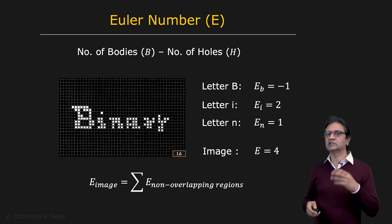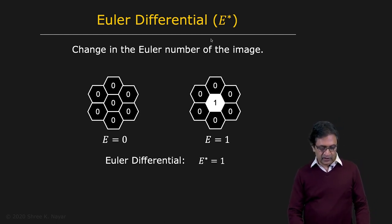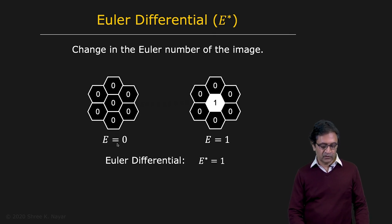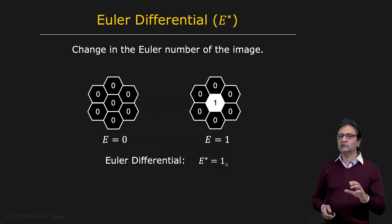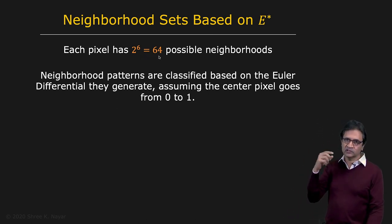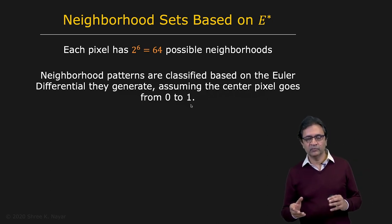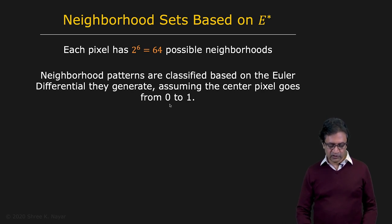We're particularly interested in these conservative operations where the Euler number doesn't change. That brings us to the notion of the Euler differential, E*. Imagine you have a pixel and its six neighbors on a hexagonal grid. If you change the center pixel from zero to one, you see that the Euler number goes from zero to one, so the Euler differential is one minus zero, which is one. And whatever the Euler differential is going from zero to one, it would be the negative when going from one to zero.